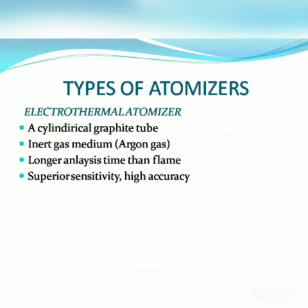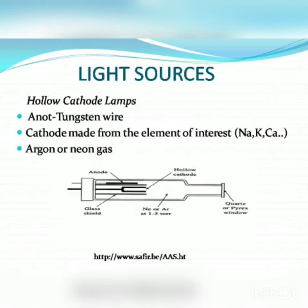Although electrothermal atomizers were developed before flame atomizers, they did not become popular until more recently due to improvements made to the detection level. They employ graphite tubes that increase temperature in a stepwise manner. Electrothermal atomization first dries the sample, evaporates much of the solvent and impurities, then atomizes the sample, and then raises it to an extremely high temperature to clean the graphite tube. Electrothermal atomization is much less harsh than flame atomization.